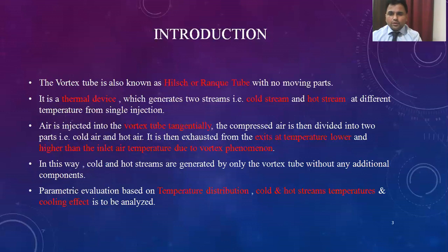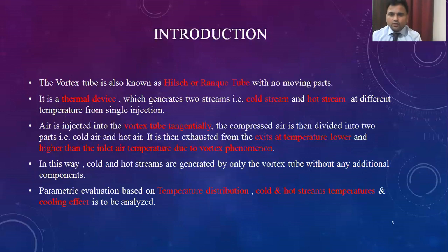Because of this energy transfer from the inner core to the outer periphery radially outwards, we get the forced vortex as the cold stream and the outer moving free vortex as the hot stream. The temperature difference between these two streams is from 80 to 100 degrees centigrade, depending upon the equipment and the geometrical and operating parameters. This is the basic working of the Vortex Tube.